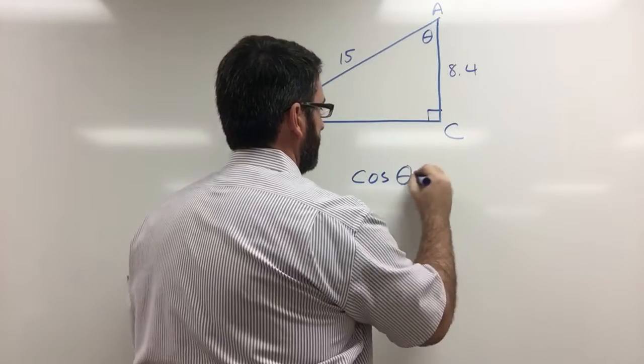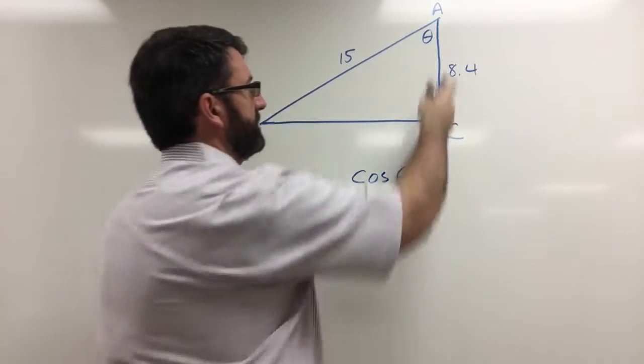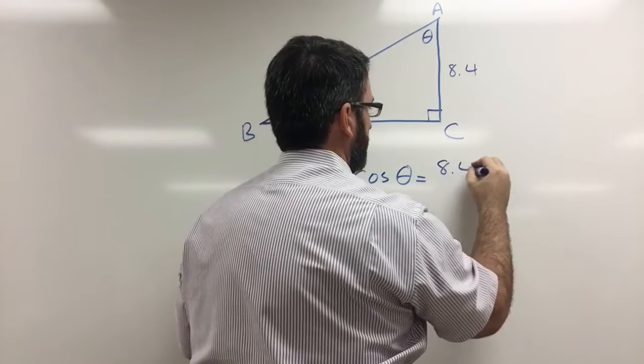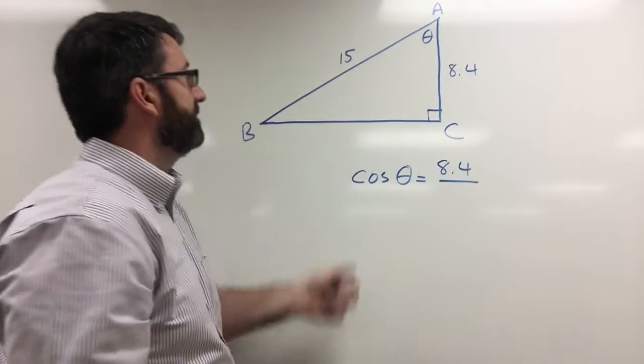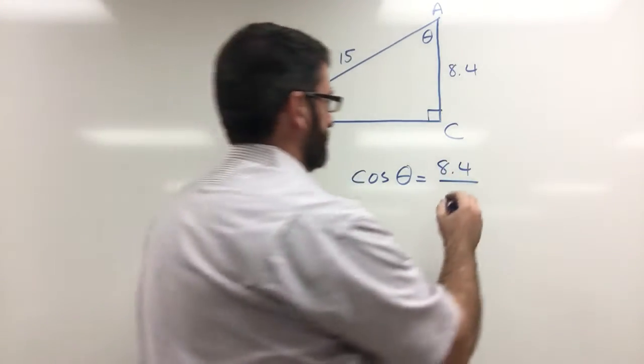The cosine of our angle theta is going to be equal to the length of the adjacent side which is 8.4 divided by the length of the hypotenuse which is 15.